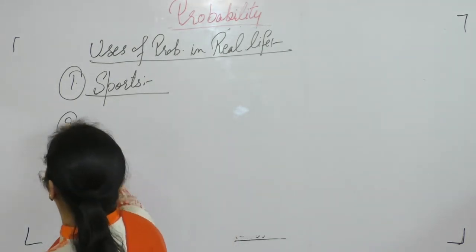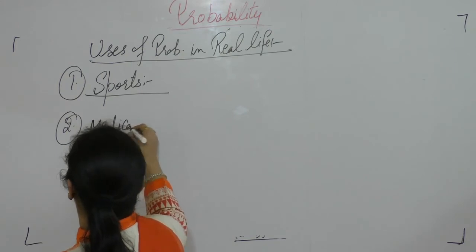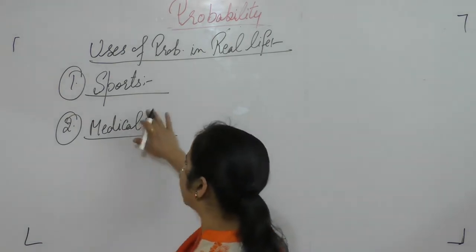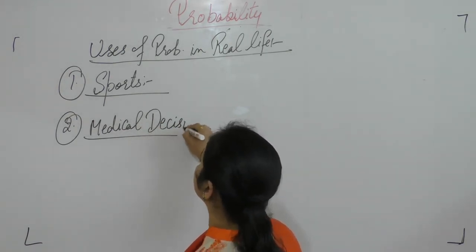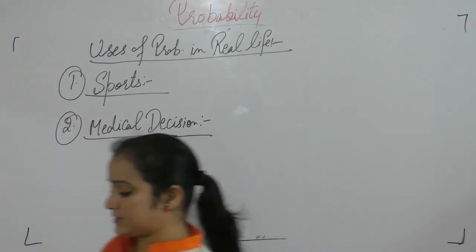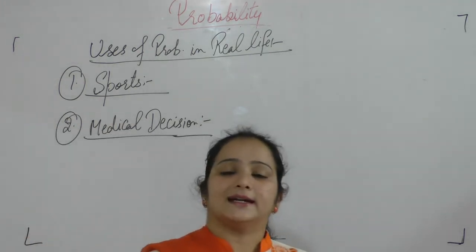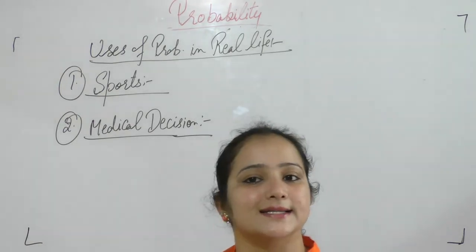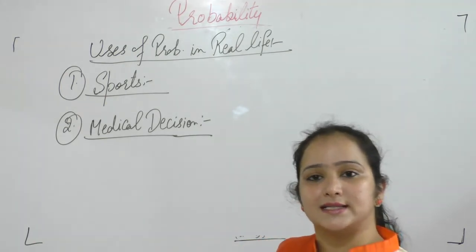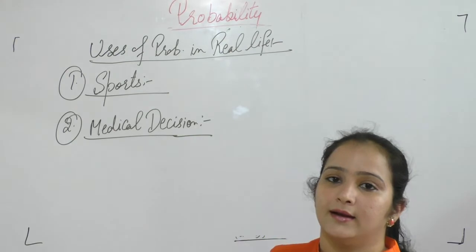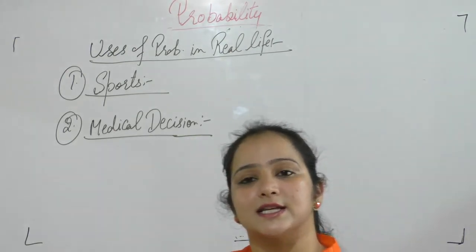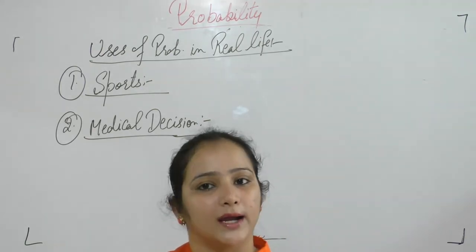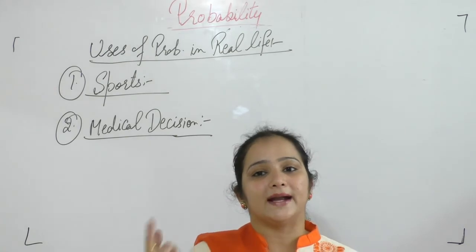In medical science, what is the use of probability in medical decisions? Suppose a doctor is performing surgery. If a patient is about to undergo surgery, they will ask about the success rate — what is the probability this operation will be successful? That depends on the doctor's past performance and experience.